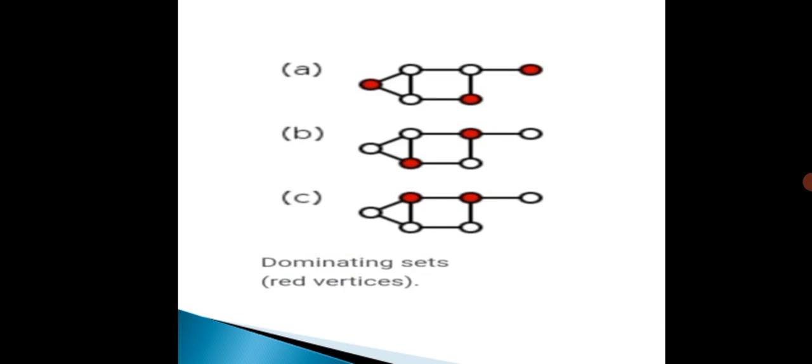In graph A, the dominating number is 3. In graph B, the dominating number is 2. In graph C, the dominating number is 2.